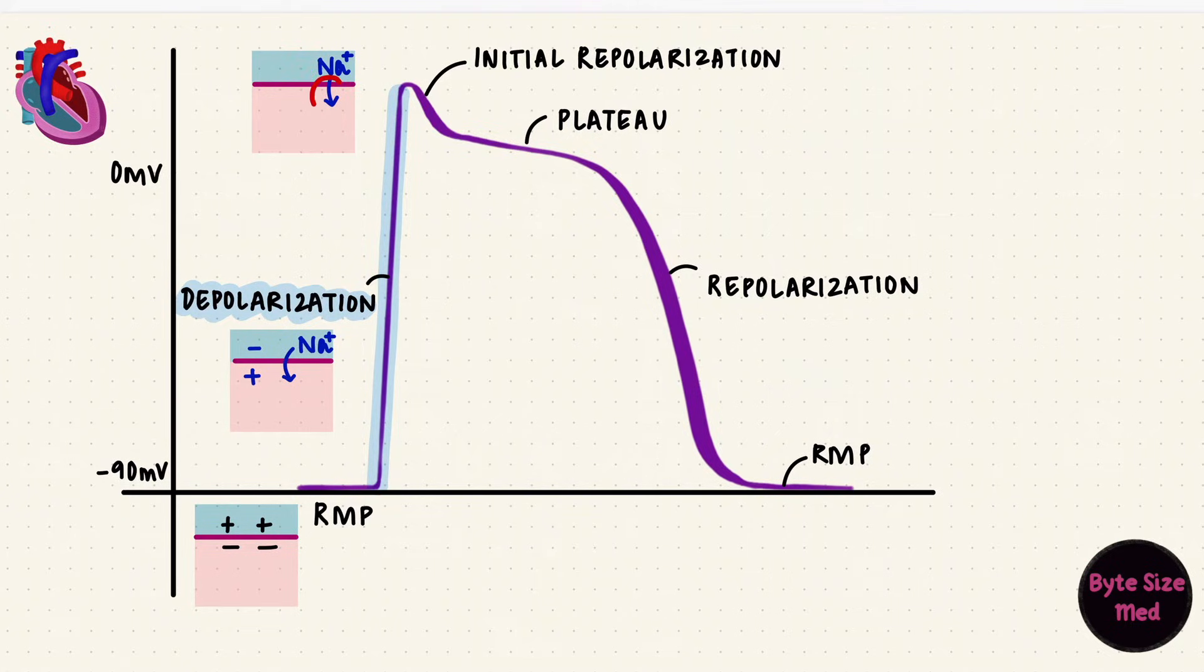The sodium channels get inactivated quickly, so the potential starts falling as potassium now starts leaving the cell. A positive ion leaving makes the membrane potential more negative. That is phase one, the notch, the initial repolarization.